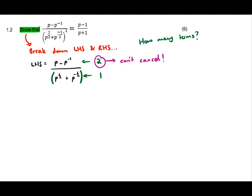In the numerator we've got p minus p to the negative one. That exponent of negative one means our numerator in fact looks like p minus one over p.